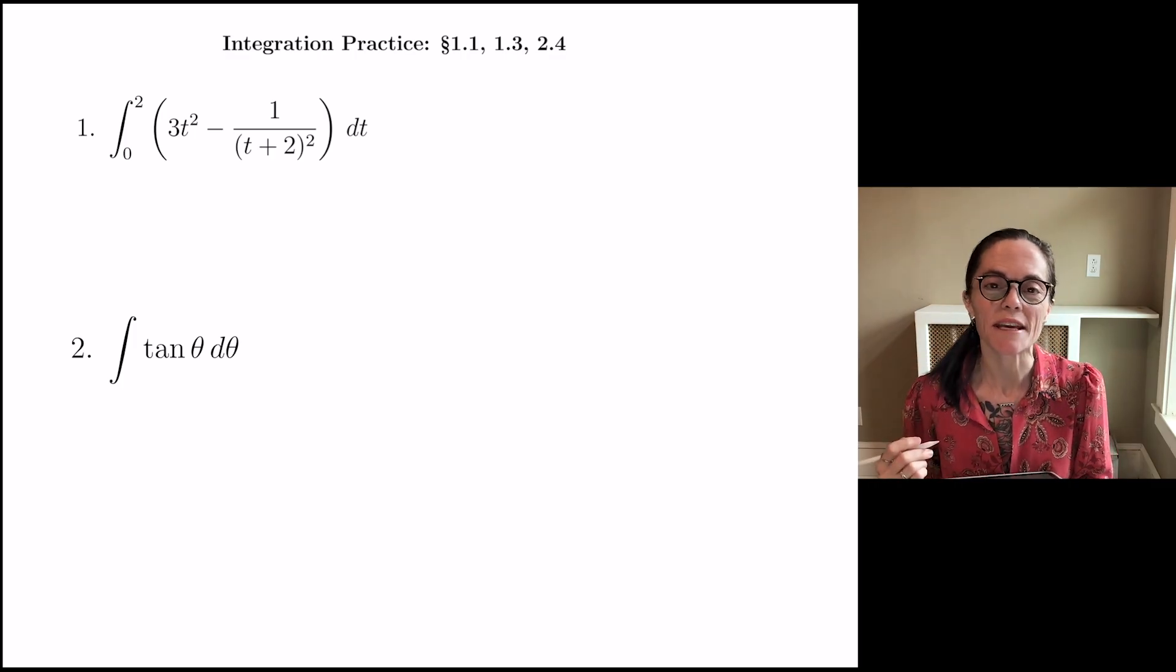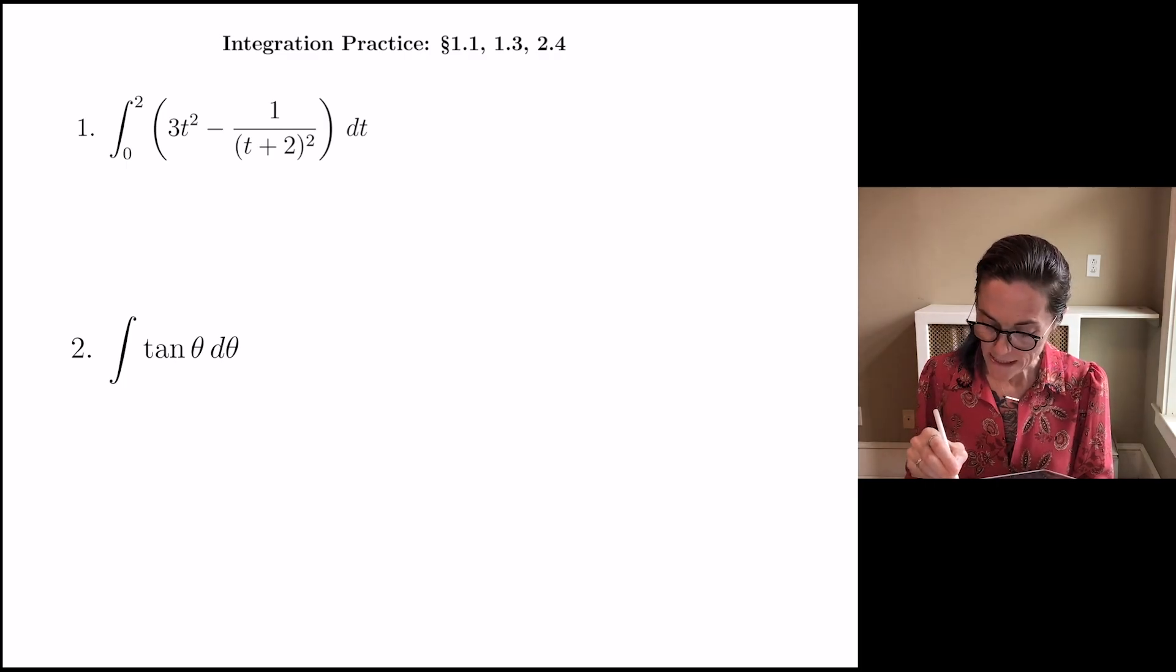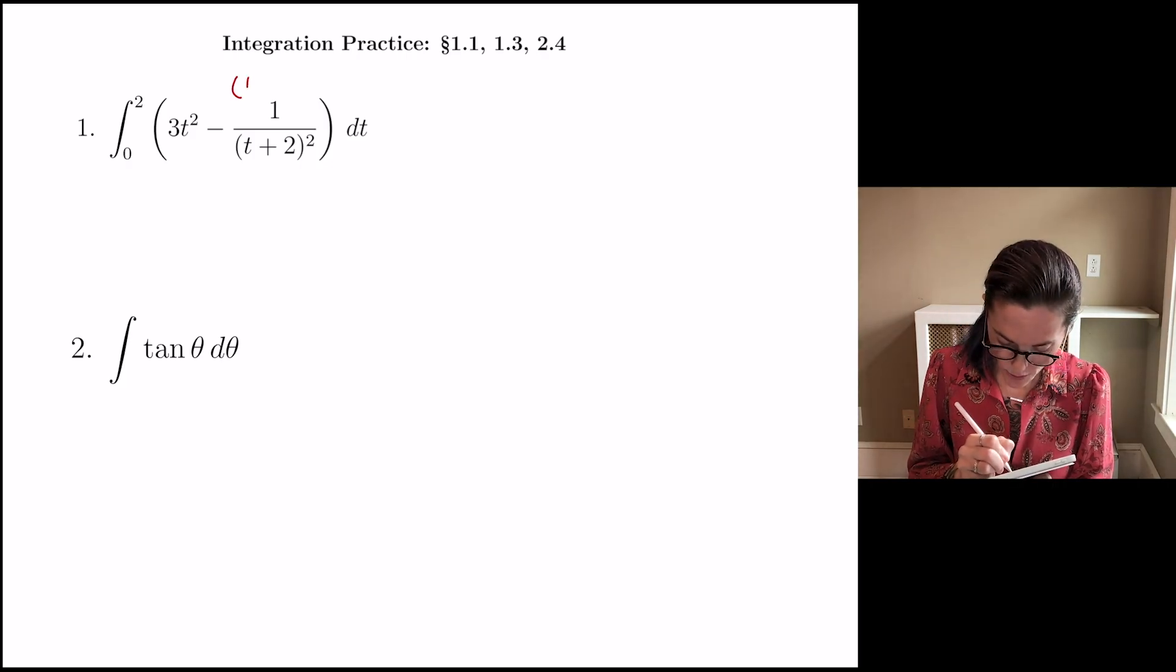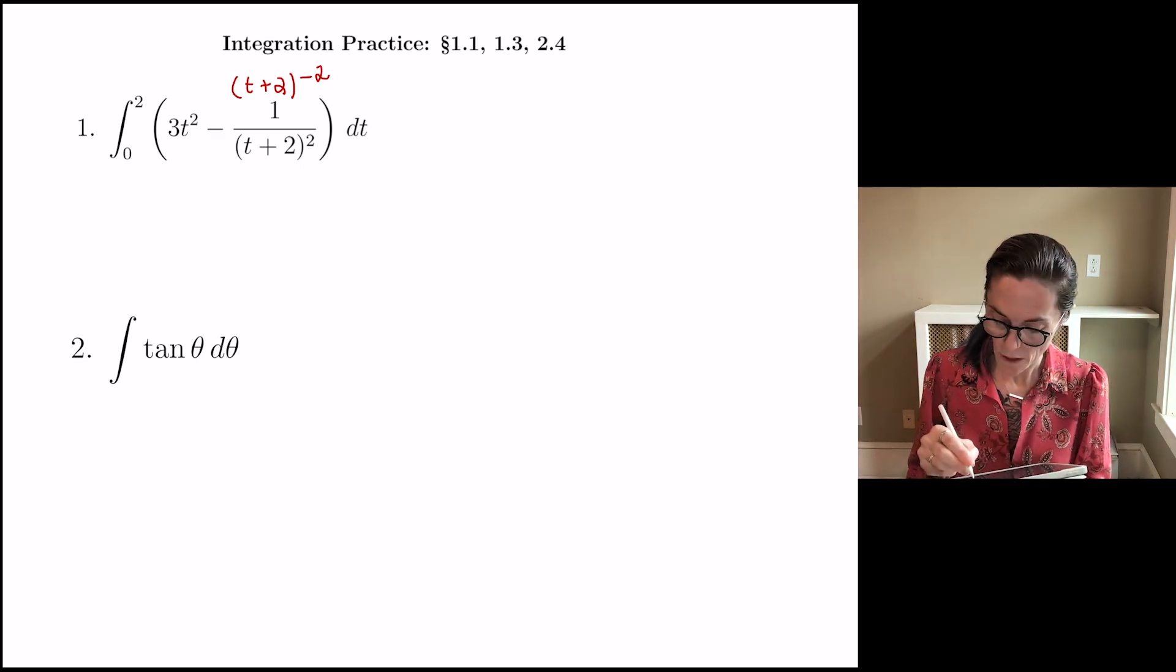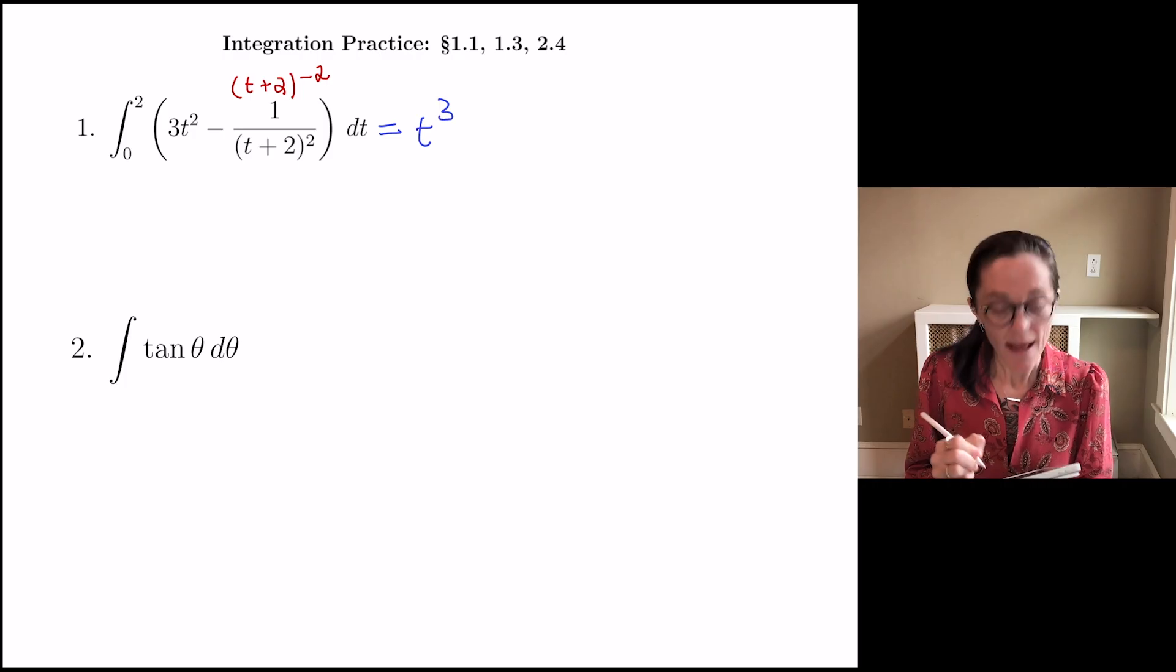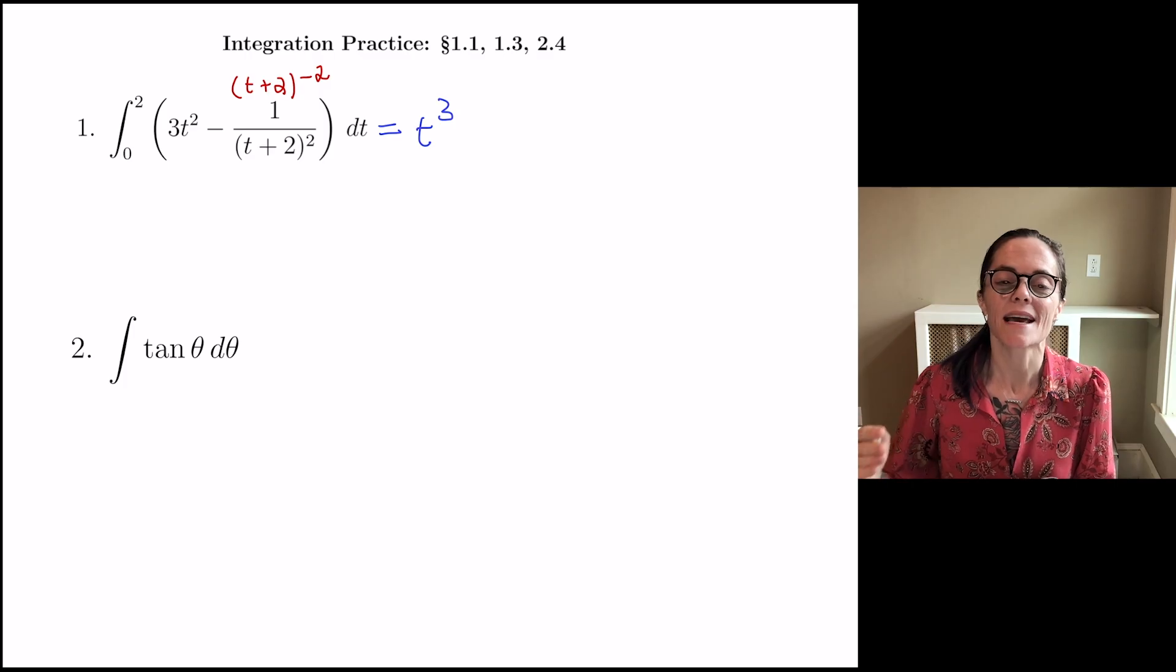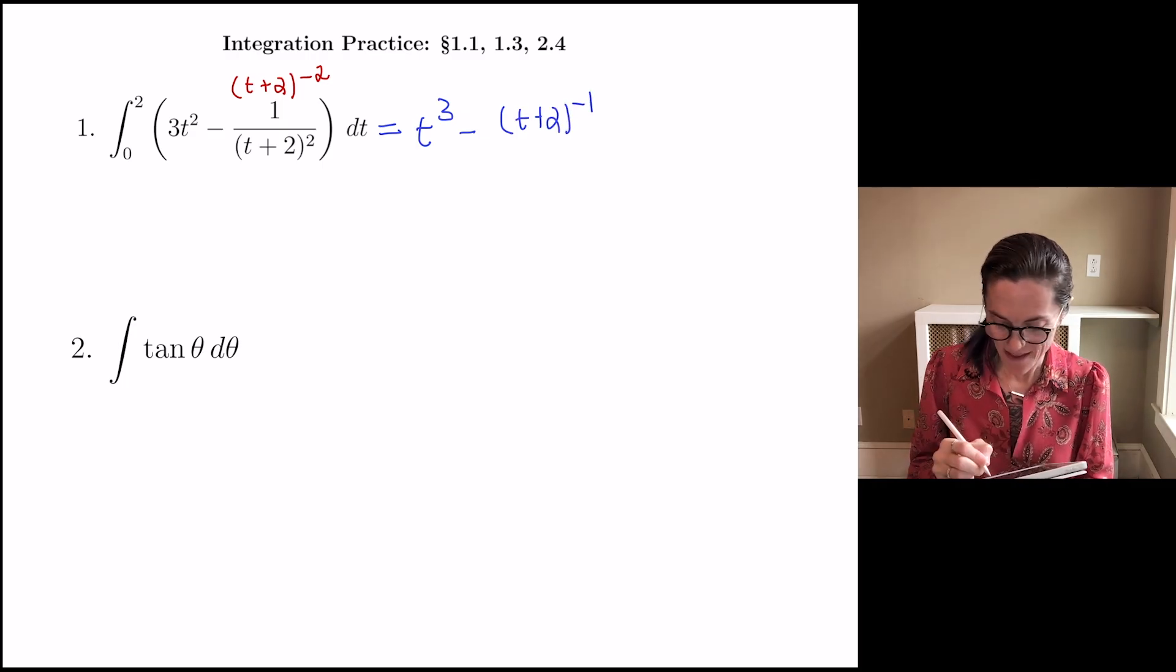Number one. We have a definite integral here, and so we will need to use fundamental theorem of calculus. Maybe the only side work I will do is let's write the second term as t plus 2 to the minus 2 power. Now, in order to find an antiderivative here, I really think of this as basic rules.